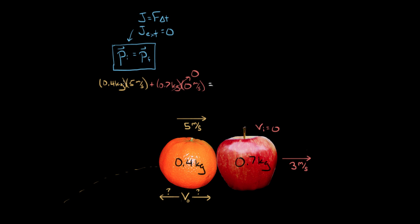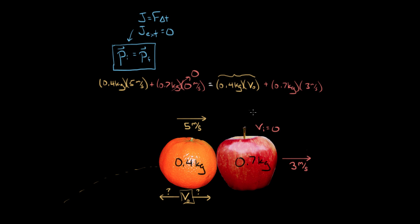Now we add up all the momentum of our system finally. So 0.4 kilograms — the mass of the orange — multiplied by VO, the final velocity of the orange, which is what we want to find. This term represents the final momentum of the orange. But I have to add to that the final momentum of the apple. Conservation of momentum says the total initial momentum of the entire system equals the total final momentum of the entire system. So I'll take 0.7 kilograms multiplied by three meters per second — the final velocity of the apple. Now I can solve.